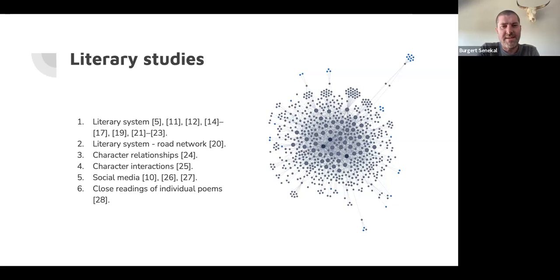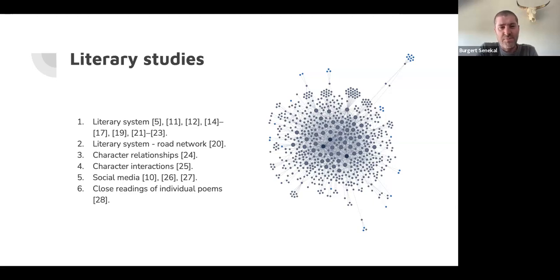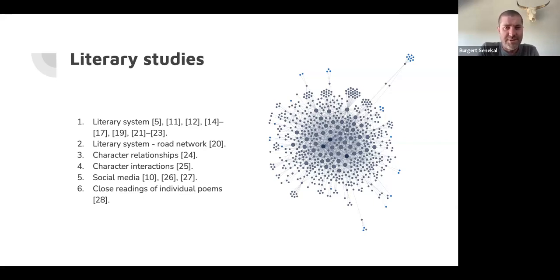I ended up relating some network features to what the Russian formalists said about literature. I mention this because having subject-specific knowledge is incredibly valuable when analyzing networks. I don't want people from the physics community to look at literature — I want literary scholars to look at literature from a network point of view, because you have a different kind of background.